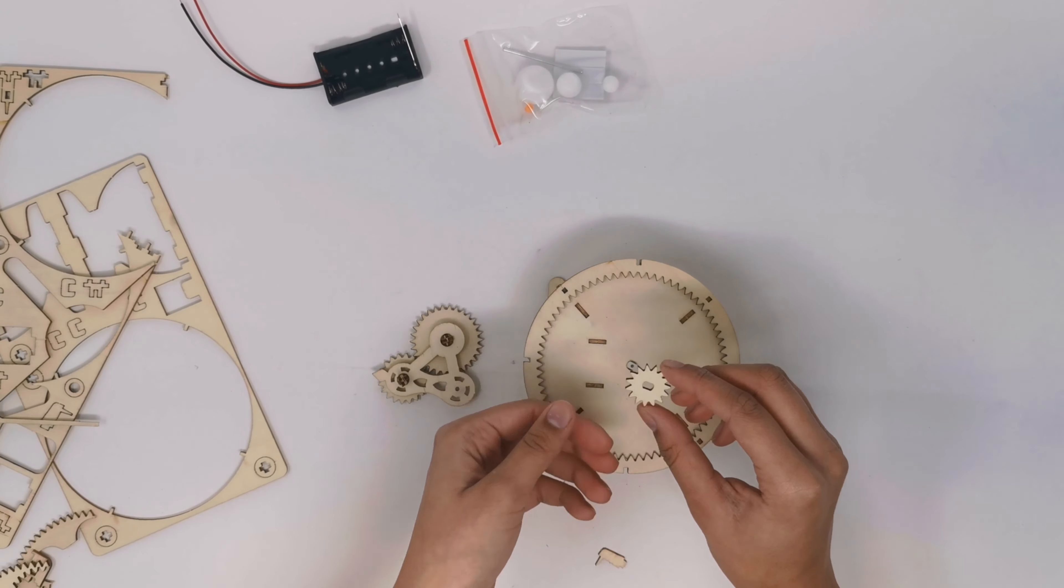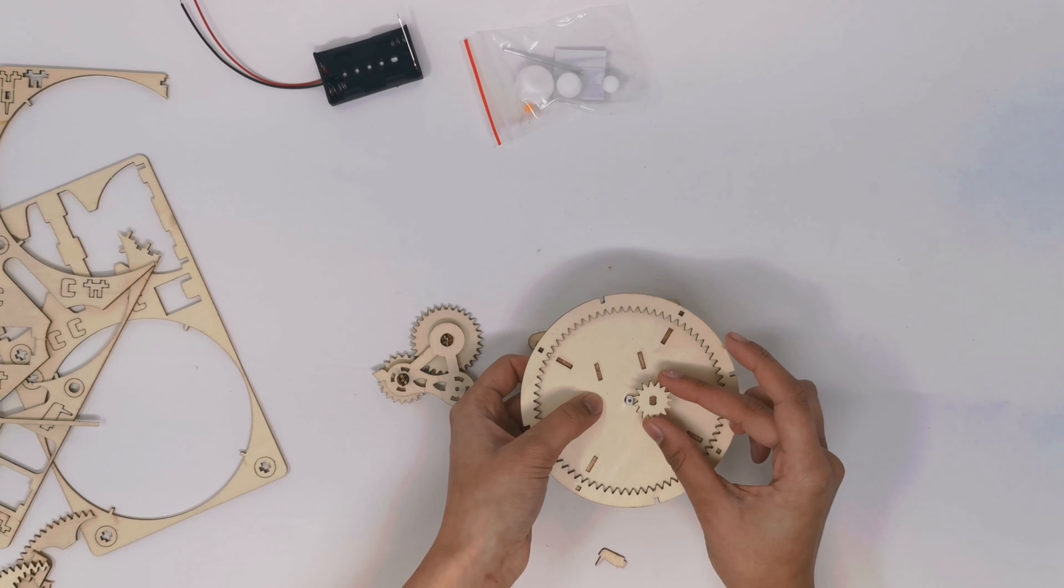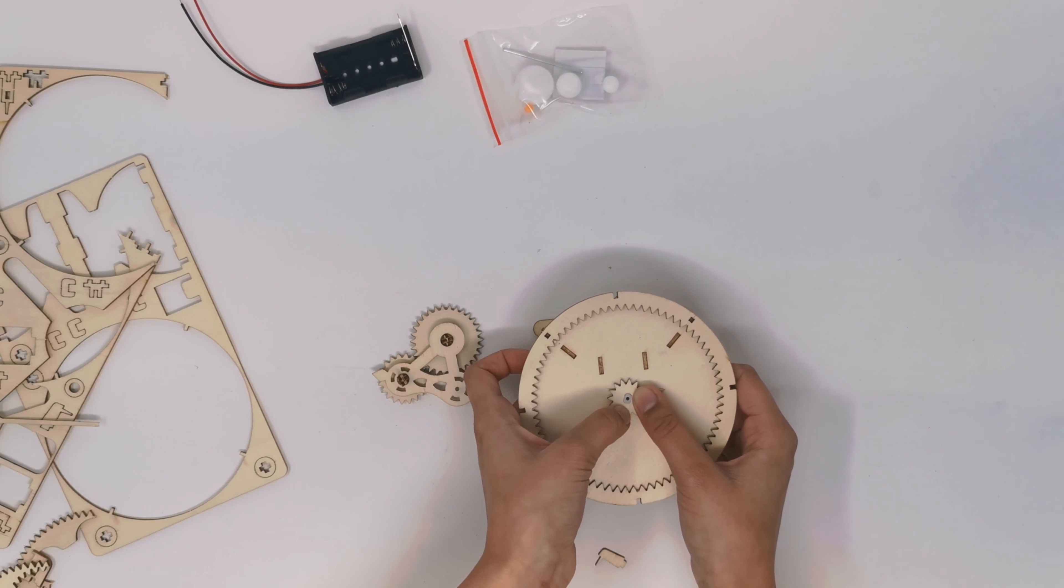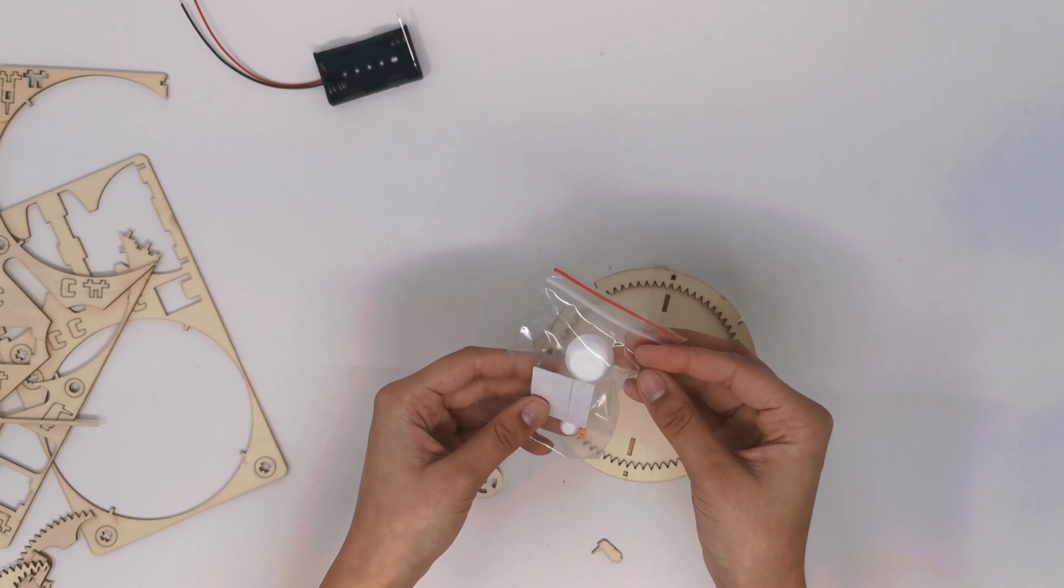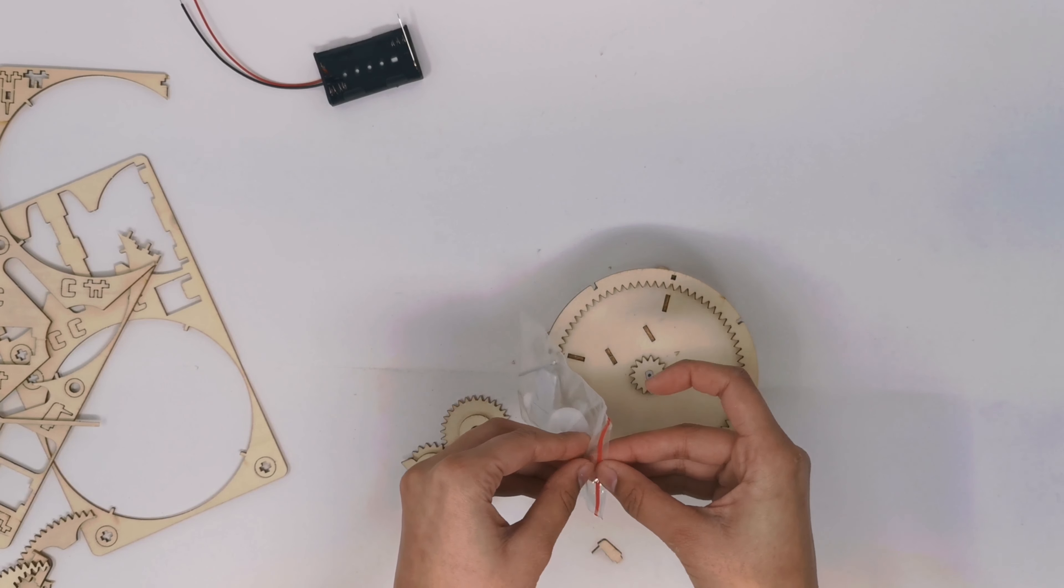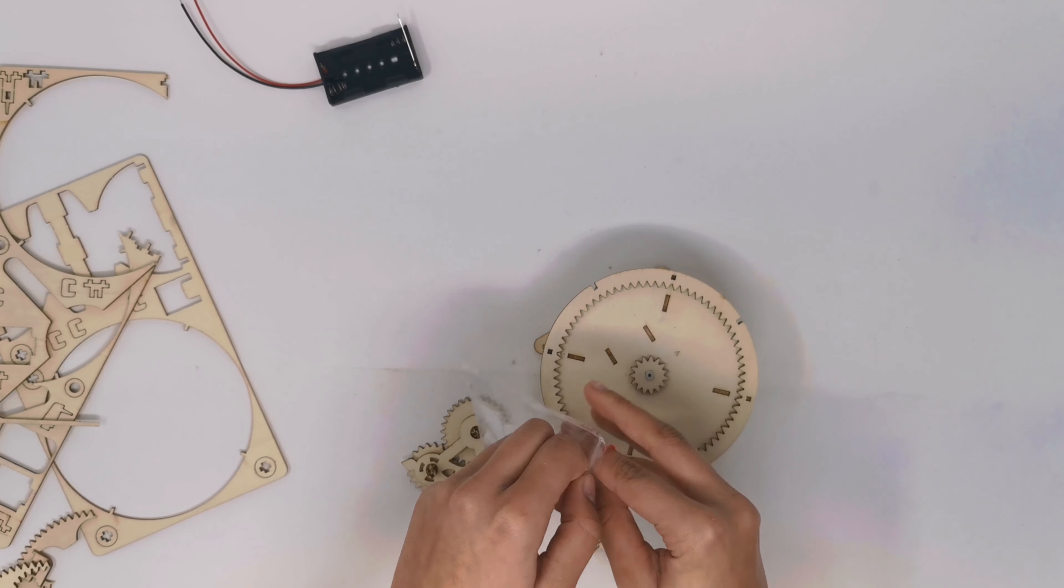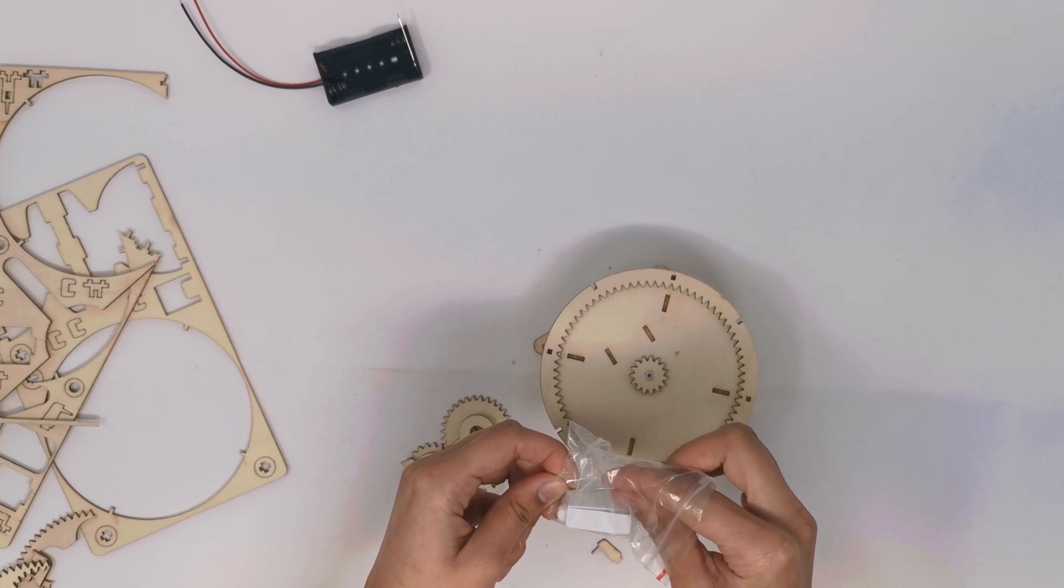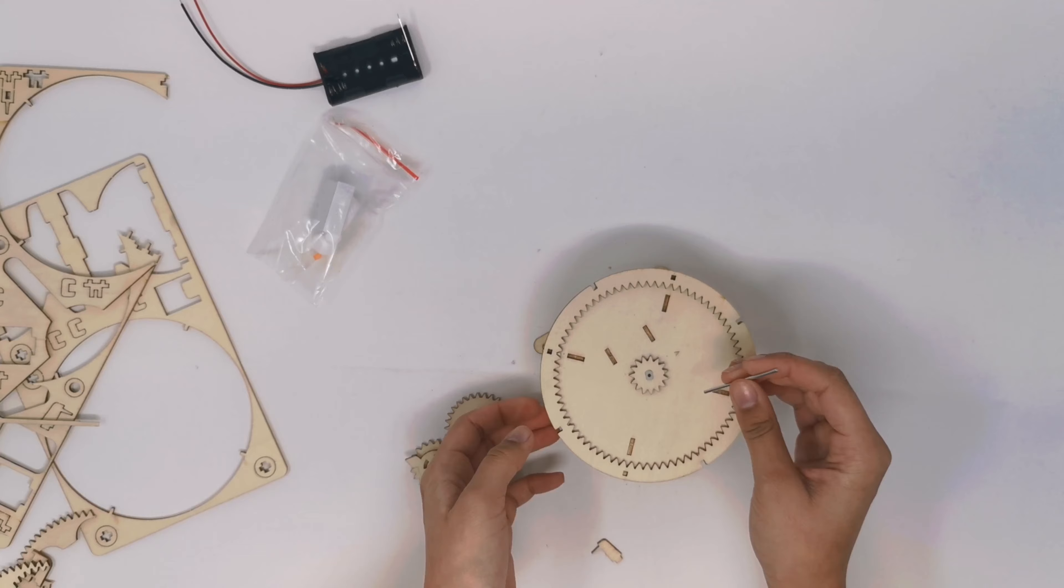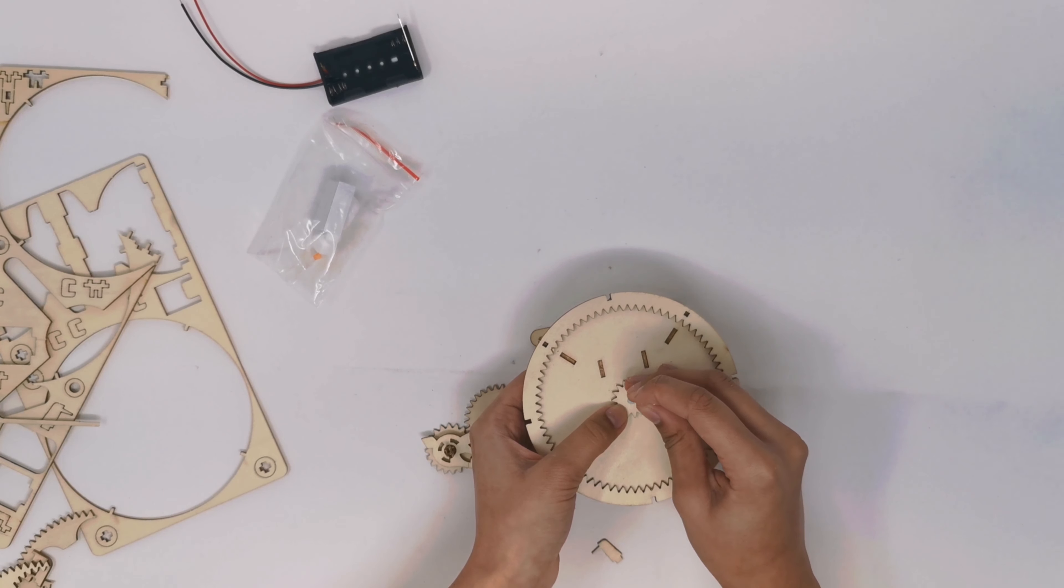Next, you want to bring back your bigger component and add the smallest gear right in the middle, and it should fit to the white plastic piece in the middle. Now, you are going to want to open up your smaller ziplock and grab this metal piece and put it into the center.